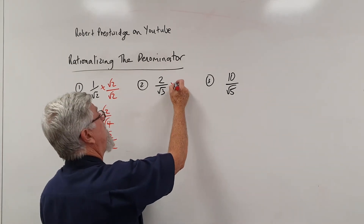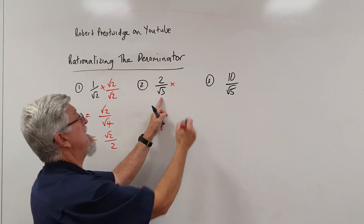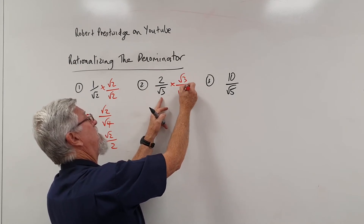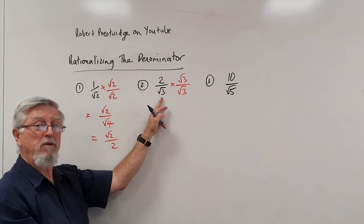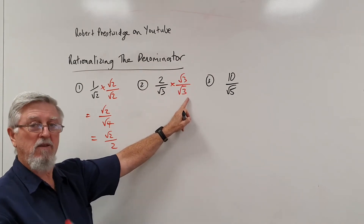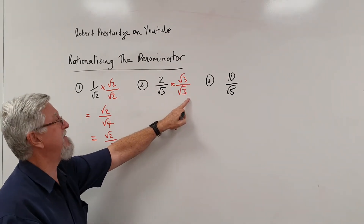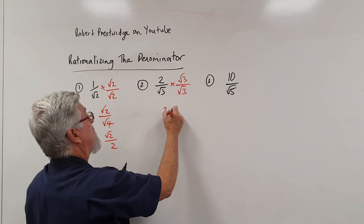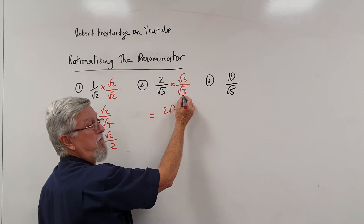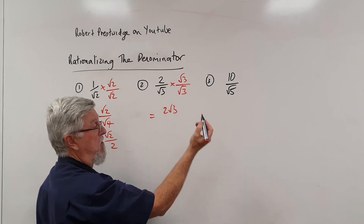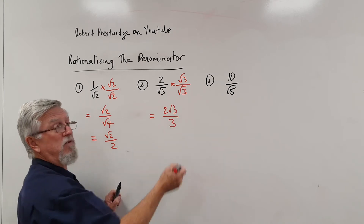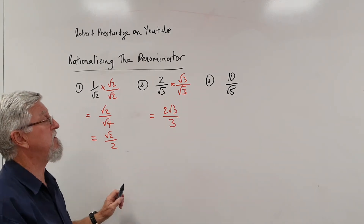This one over here, we want to get rid of a root 3. So if I multiply by root 3 on root 3 and see what happens. That's how it all happens — we're multiplying by 1. Anything times 1 stays the same. So the top becomes 2 root 3. And the bottom is root 3 by root 3, which is root 9, which is just 3. So roots cancel each other out and stay the same.